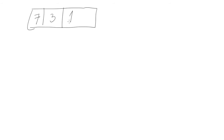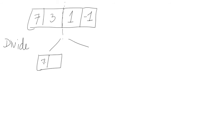Let's understand with the help of an example. Suppose I have a list: 7, 3, 1, and -1. The divide phase in merge sort works like this: the list is arbitrarily divided into two halves. The first half, the left half, will be 7 and 3, and the right half will be 1 and -1. The divide is pretty simple — you just take the list and divide it into two halves.